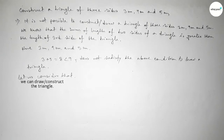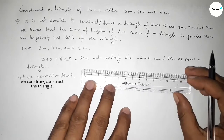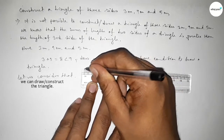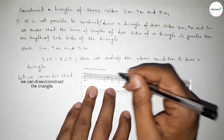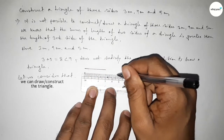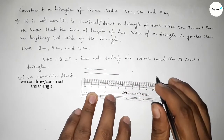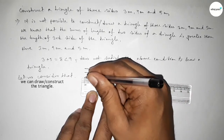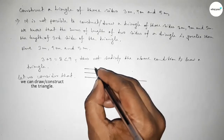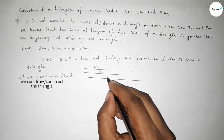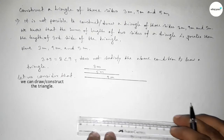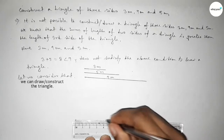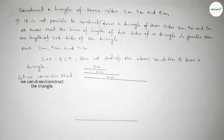Let us assume that we can construct or draw the triangle. First, drawing a line of length 3 centimeter, then 5 centimeter, and last 9 centimeter. Now drawing a line of length 9 centimeter with the three sides: 3 centimeter, 5 centimeter, and 9 centimeter.